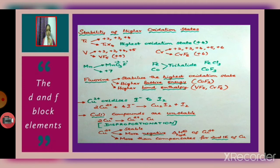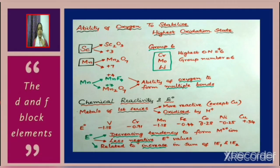Cu²⁺ is more stable than Cu⁺. This is because Cu²⁺ has a more negative hydration enthalpy — a large amount of energy is released as hydration enthalpy, which compensates for the large second ionization enthalpy of copper.